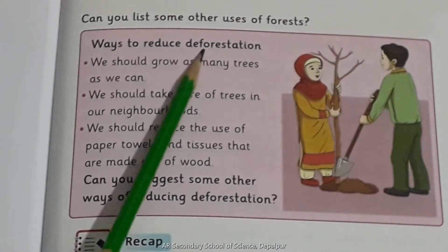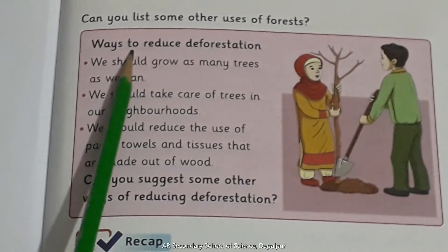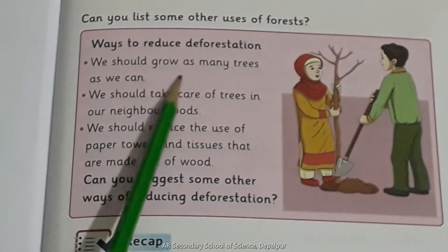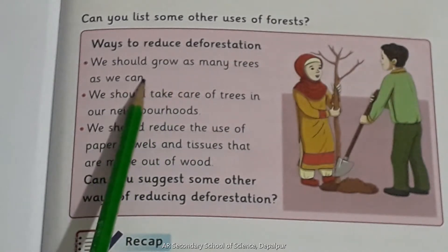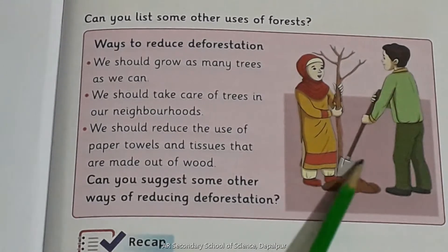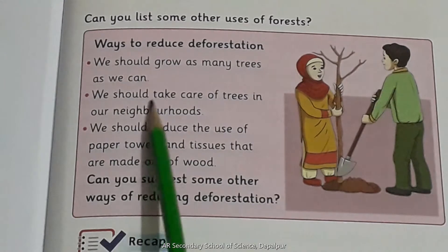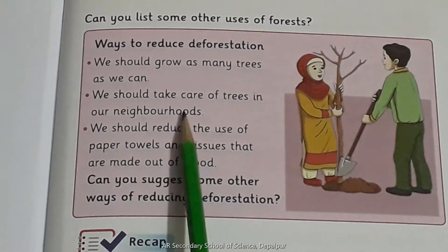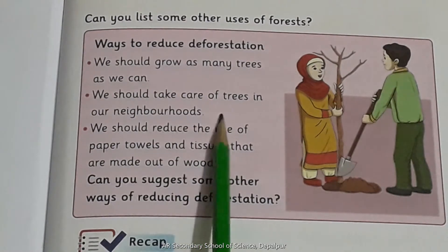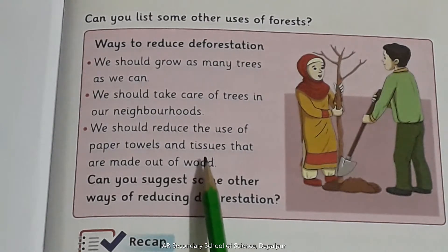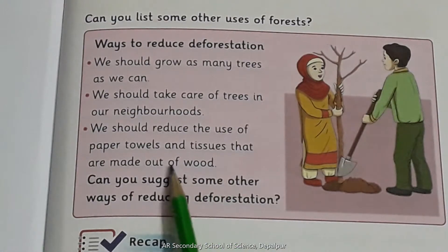Ways to reduce deforestation — deforestation کو کم کرنے کے طریقے: We should grow as many trees as we can — ہمیں جتنے زیادہ سے زیادہ درخت لگا سکتے ہیں لگانے چاہئیں، جیسا کہ اس picture میں ایک girl اور ایک boy new plant لگا رہے ہیں۔ We should take care of trees in our neighborhoods — ہمیں اپنے قریب موجود trees کی حفاظت کرنی چاہیے۔ We should reduce the use of paper towels and tissues that are made out of wood — ہمیں paper towels اور tissues کا استعمال کم کرنا چاہیے جو لکڑی سے بنتے ہیں۔